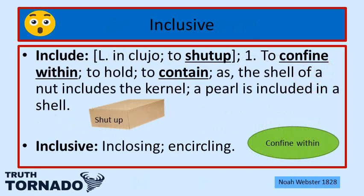The root word for inclusive is include. Include comes from Latin 'in' and 'cludo,' which means to shut up — to confine within, to hold, to contain. For example, as the shell of a nut includes the kernel: the kernel is within that shell, completely shut off, completely enclosed. A pearl is included in a shell — completely within and completely confined.